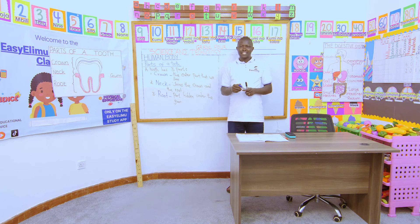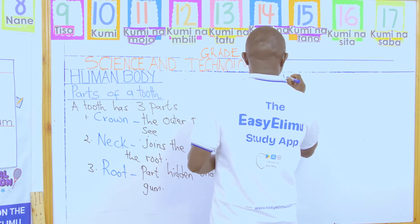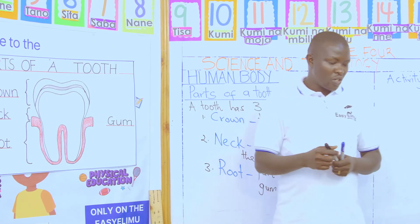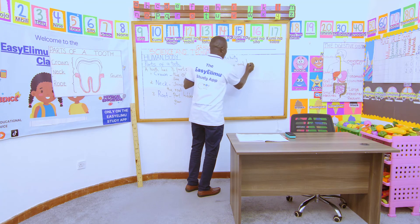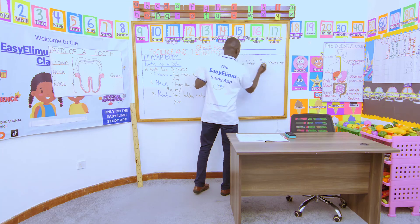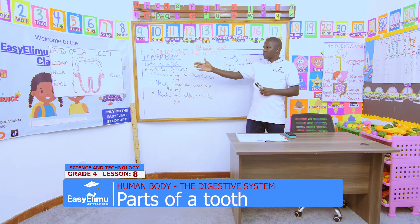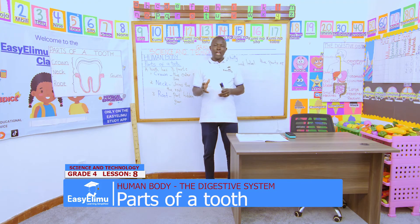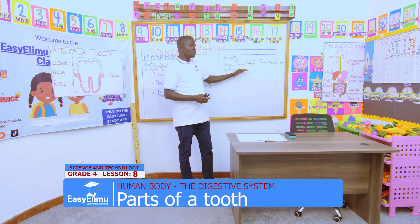Our activity for today: in our groups, observe the charts bearing the parts of a tooth, then draw and label properly from that chart the parts of a tooth. When you go home, kindly ask your parent to help you identify from their laptop the parts of a tooth the way we have done. Draw and label them.